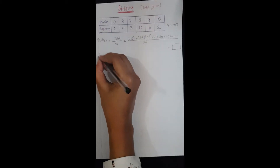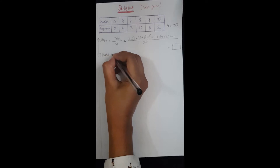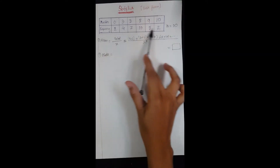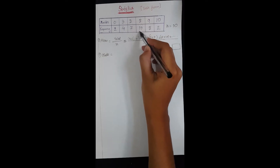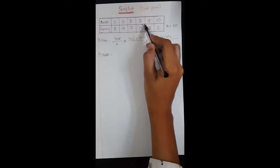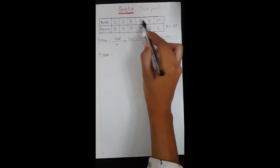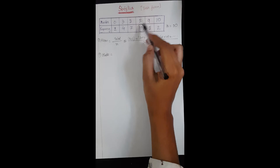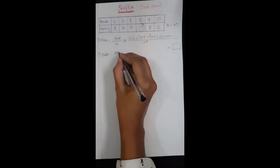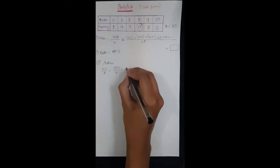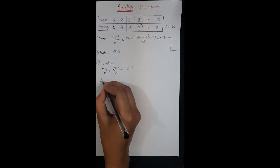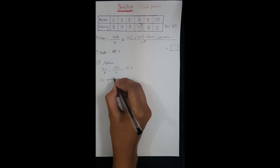Next comes the mode. Mode is the highest frequency number. Looking at the second row, the highest number is 10, meaning 8 is scored by 10 students. This is the score obtained by the highest number of students, so mode equals 8.